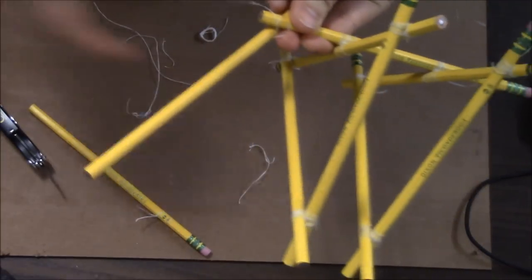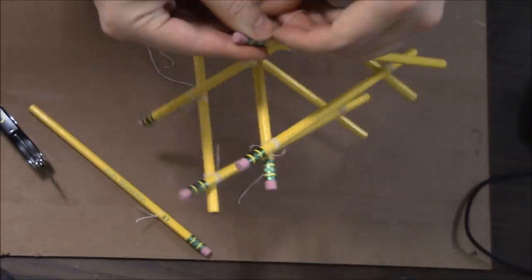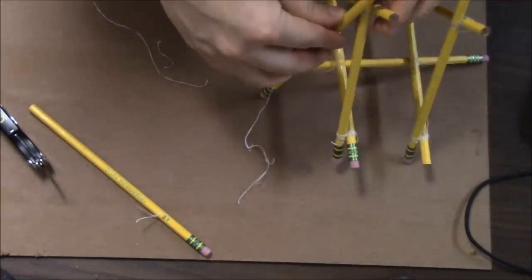Now, let's add diagonal supports to keep the A-frame steady. I do this using diagonal lashings.